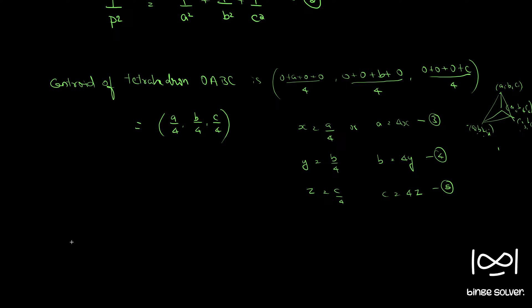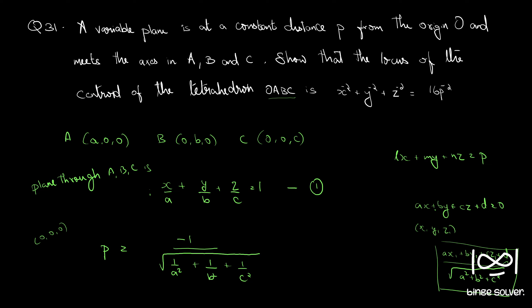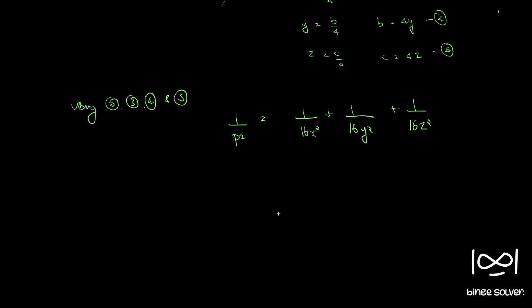So using 2, 3, 4 and 5 we get 1 by p square is equal to 1 by a square, a square is 16x square. We can take 16 to the other side so 16 p raise to minus 2 equal to x raise to minus 2 plus y raise to minus 2 plus z raise to minus 2. So this is the required equation of the locus.